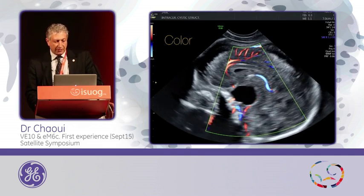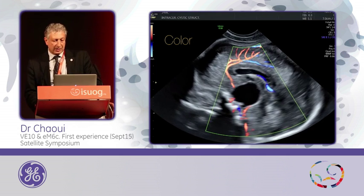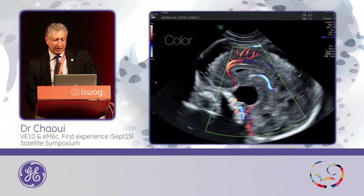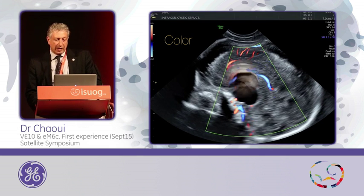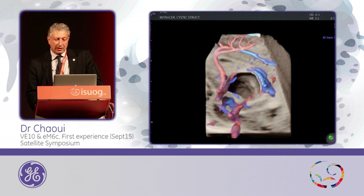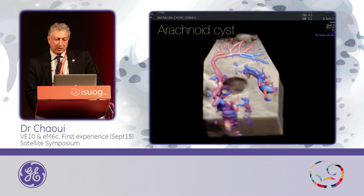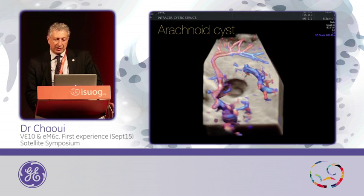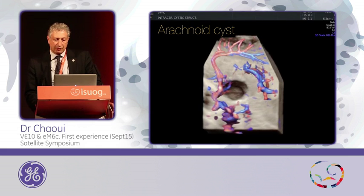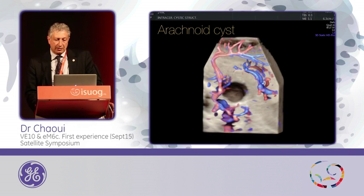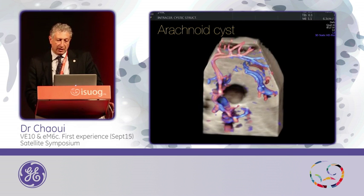And you see here the posterior vertebral and basilar artery going there. Then by calculating a volume, this is the result and this is how it appears on 3D — and especially you can appreciate the presence of both internal cerebral arteries.